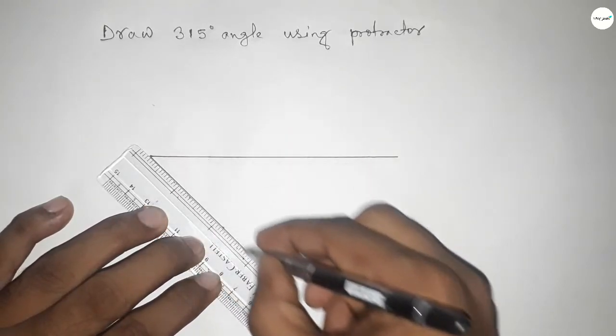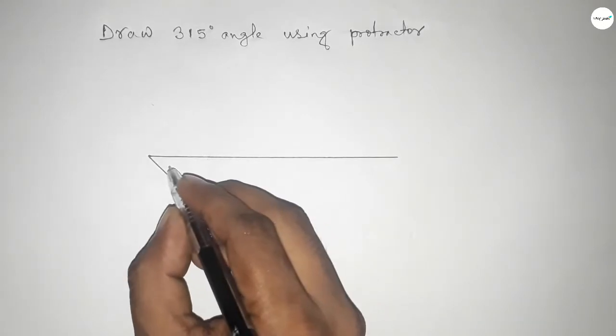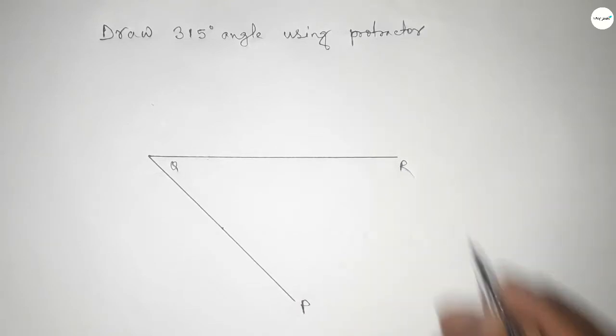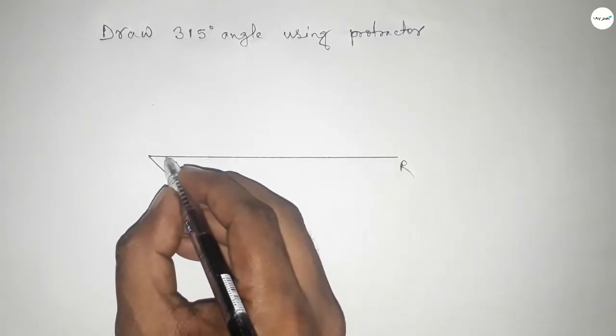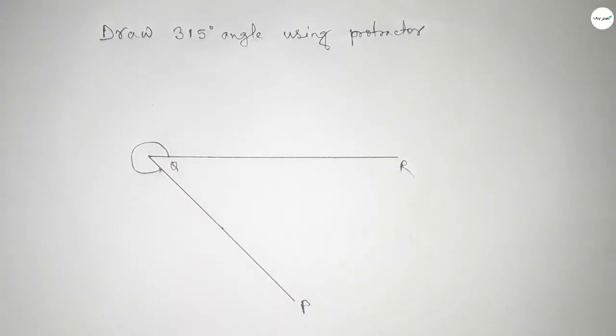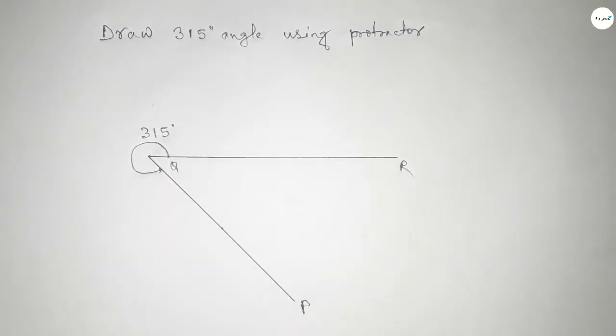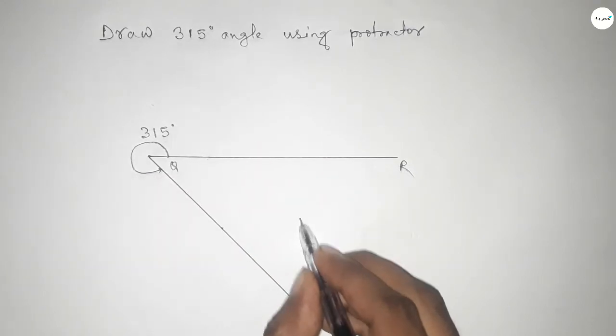We got a 315-degree angle. This is PQR, so angle PQR is this. This is a 315-degree angle. Therefore,